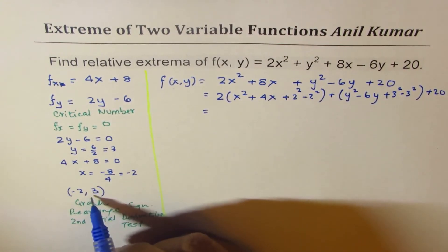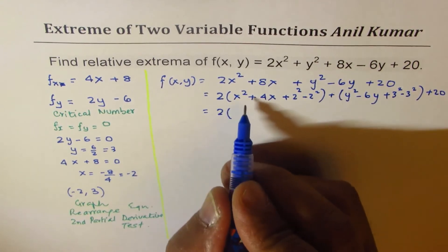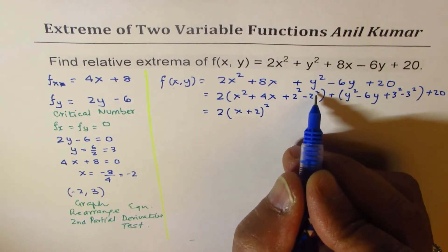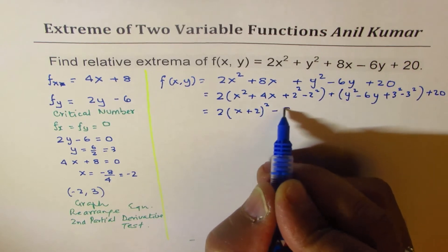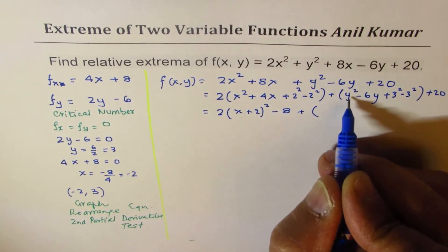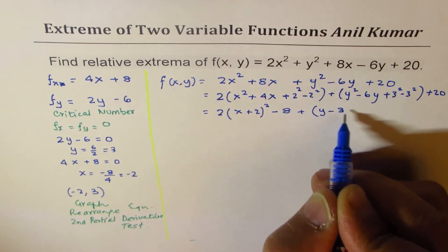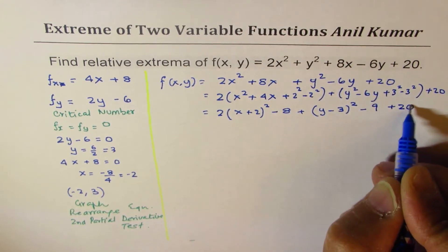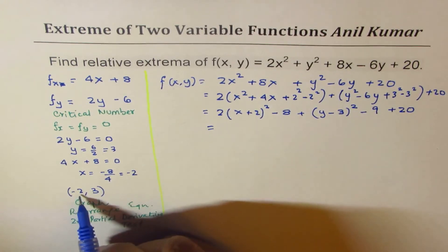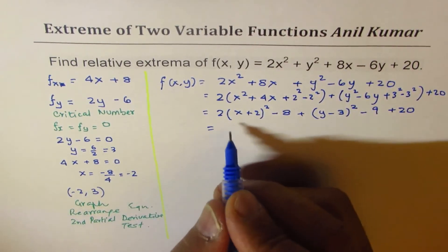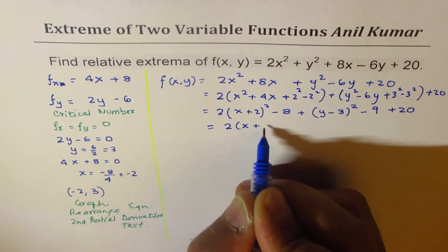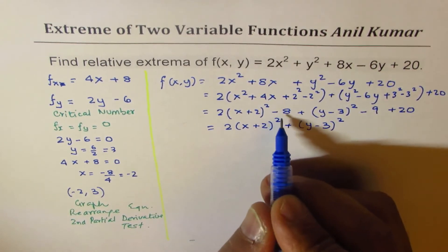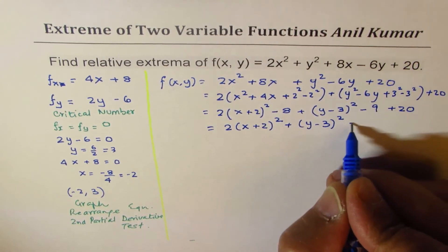Expanding: we get 2(x + 2)² and 2 times -4 gives -8. For the y-terms: (y - 3)² minus 9. So combining everything: 2(x + 2)² + (y - 3)² - 8 - 9 + 20, which simplifies to 2(x + 2)² + (y - 3)² + 3.